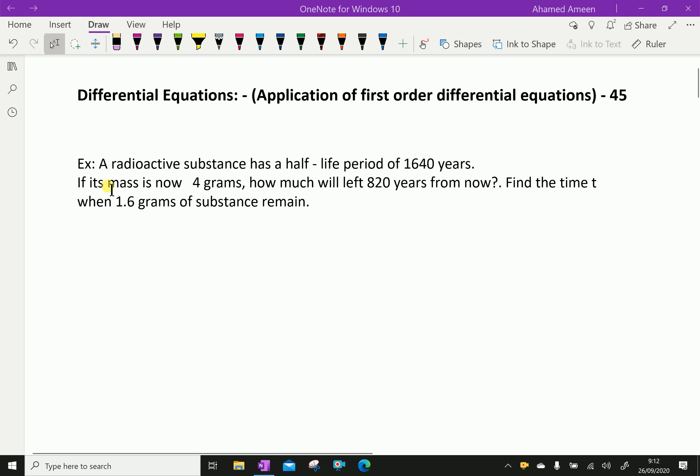Look at this example. A radioactive substance has a half-life period of 1640 years. If its mass is now 4 grams, how much will be left 820 years from now? Find the time when 1.6 grams of substance remain.